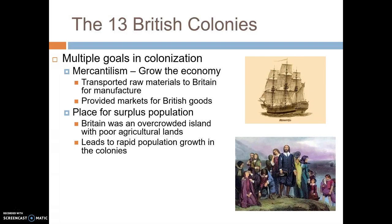The second goal was to provide a place for their surplus population. Britain was an island that was overcrowded with very poor agricultural lands and trouble supporting its population. By encouraging movement to the colonies, it led to rapid population growth there. So the British population in the colonies grew very quickly compared to Spain or France.